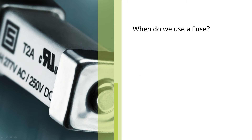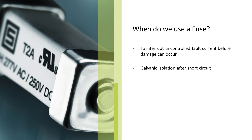The function of a fuse is to interrupt an uncontrolled fault current or short circuit before serious damage can occur, such as overheating of equipment. An interrupted fuse is in galvanic isolation in your circuit — current can no longer flow. Therefore, a fuse does not only prevent fires caused by a short circuit; it also prevents people from electrical shocks.